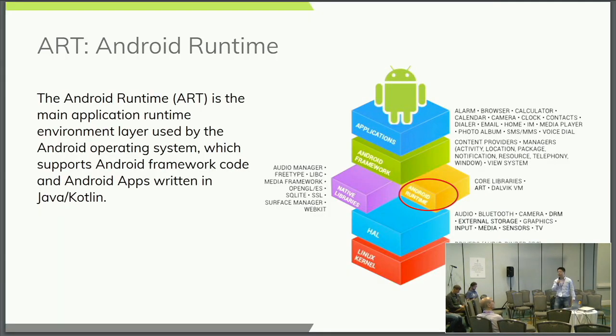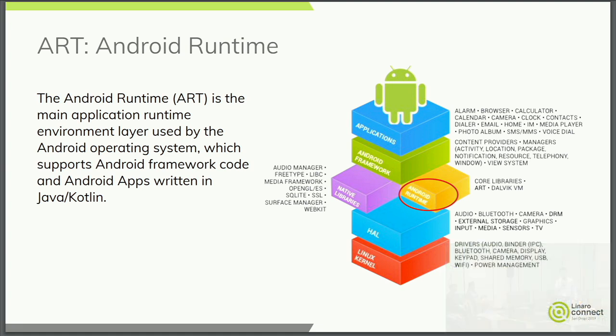A brief introduction of Android Runtime. Android Runtime is the execution layer in the Android software stack. Most Android applications and a large part of the Android framework are written in Java or Kotlin code. These Java and Kotlin sources are compiled into an Android internal format called Dalvik bytecode, and the Runtime is the execution layer which runs the Dalvik bytecode.